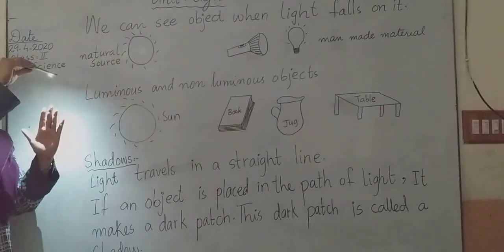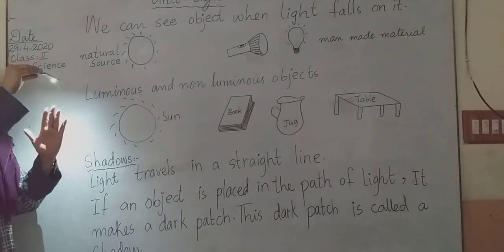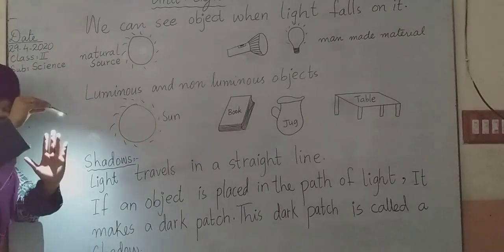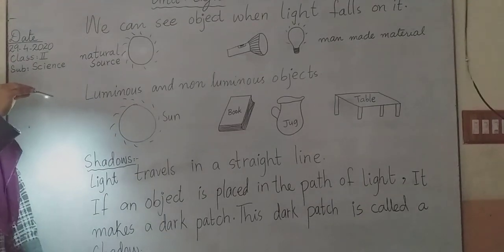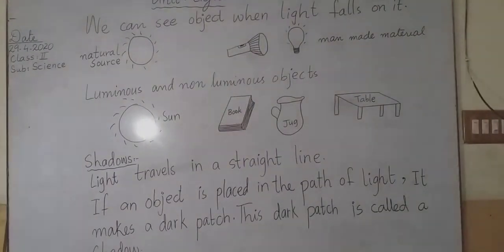When the object is above your head, the shadow will come down. Okay? Do you understand now? Thank you.